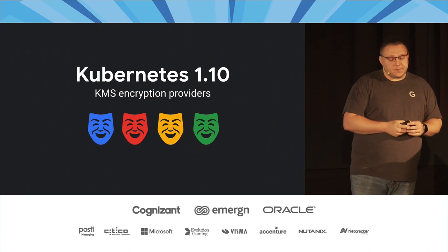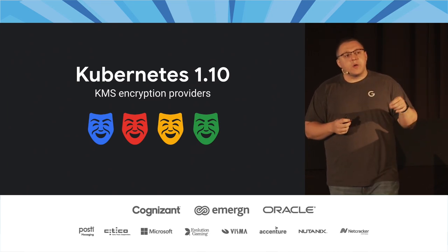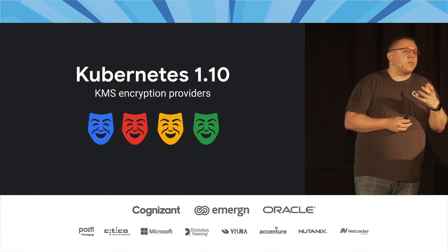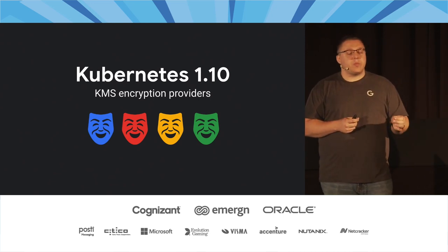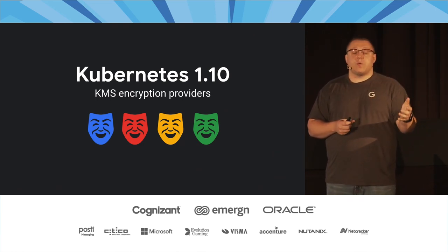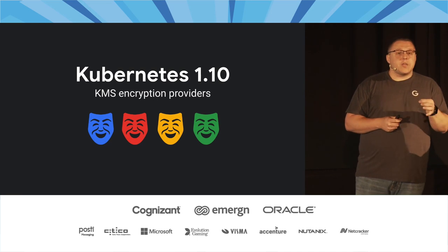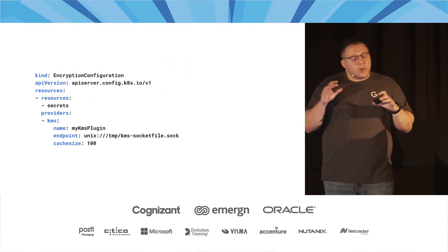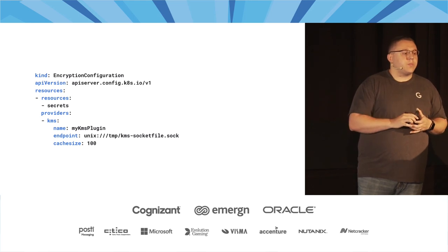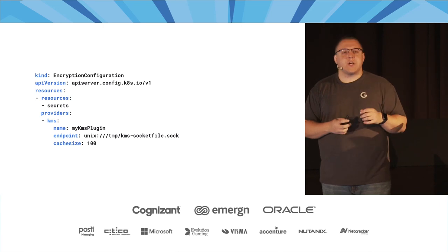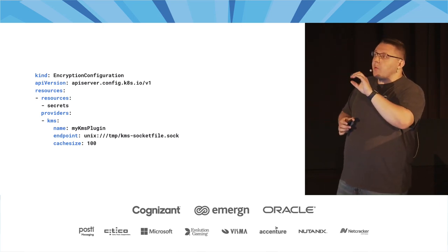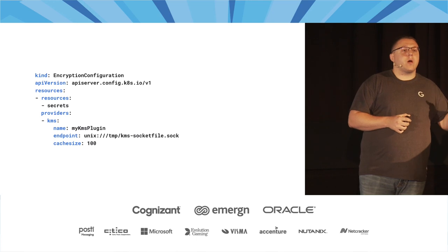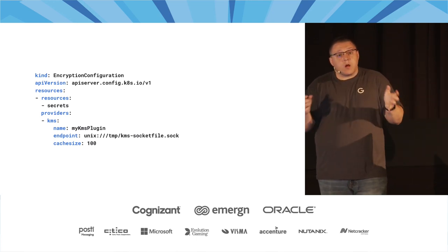So let's talk about Kubernetes 1.10. It took the 1.7 envelope encryption a step further and allows for pluggable key management service encryption providers. This is a plugin-based system that allows third parties — cloud providers, HashiCorp Vault, CyberArk — to act as a KMS on behalf of Kubernetes. You still write an encryption configuration file, but notice there are no keys in it. Instead, there's a Unix socket endpoint and a cache size — just an implementation detail — where the KMS plugin lives. This plugin is pluggable; you can write your own.